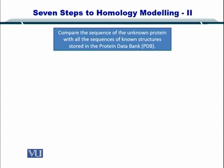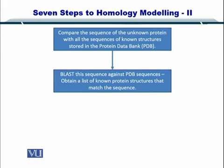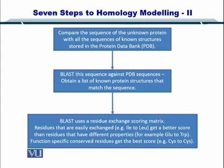Now, if you had more than one template that you found, then of course you have to perform alignments multiple times, that is multiple sequence alignment. While if you found one template, all you have to do is align the template and the target sequence. Essentially, the first step of homology modeling encompasses these four steps. The first step is to compare the sequence of the unknown protein — the protein which has the unknown structure — with all the sequences of proteins whose structures are known. This is found in the Protein Data Bank, the PDB database. You then compare the sequence of the protein with unknown structure against all proteins whose structures are known, BLAST them, and find the proteins which have the highest score, which obviously means the sequences are similar. The BLAST algorithm uses a residue exchange scoring matrix, BLOSUM and PAM.